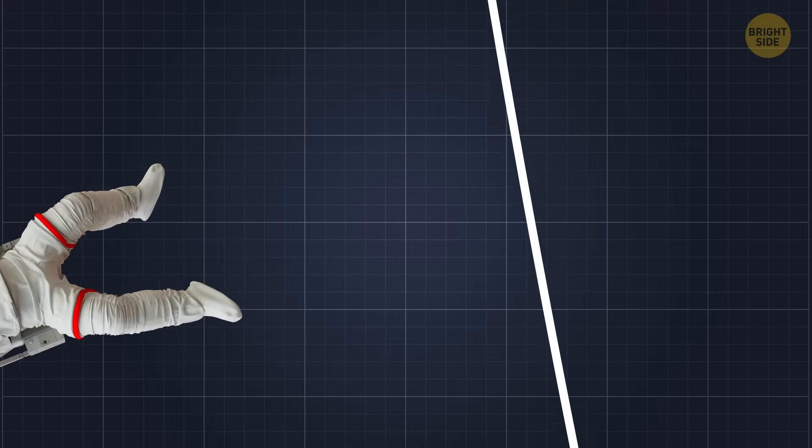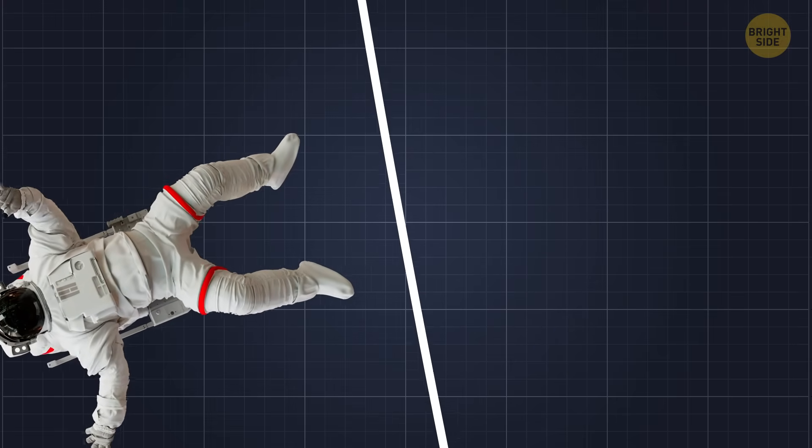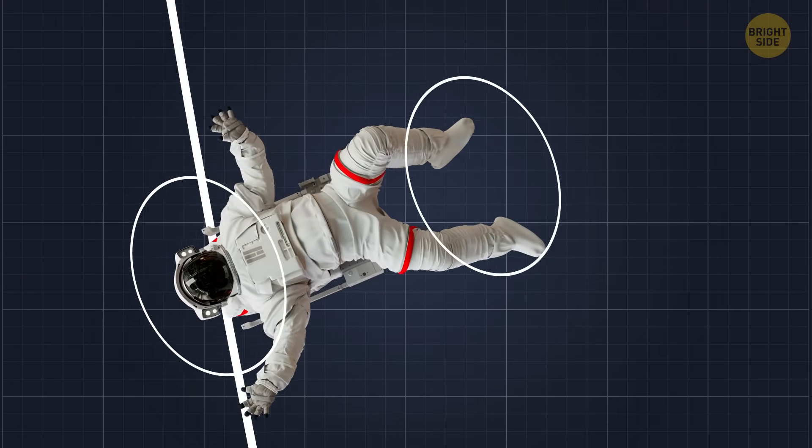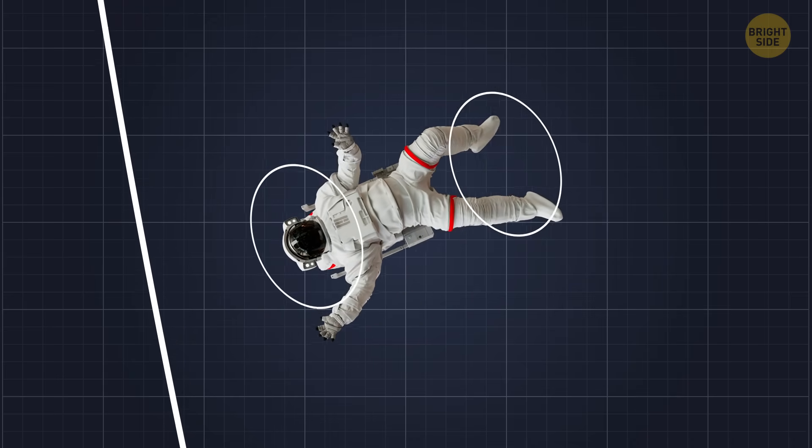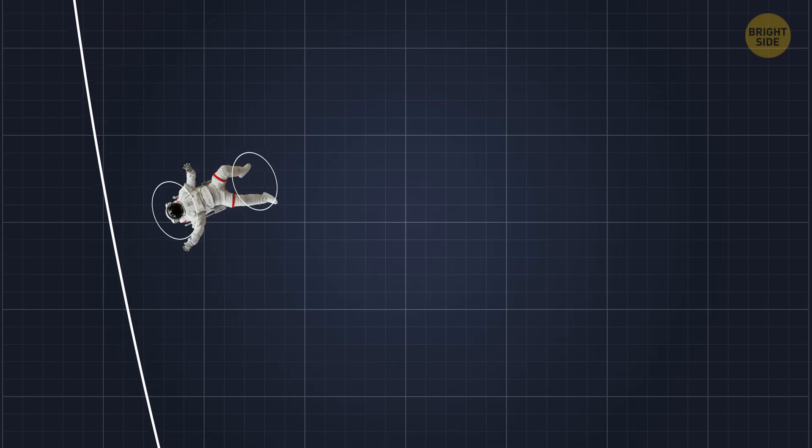That difference matters because the gravitational pull between your head and your toes in a supermassive black hole isn't extreme. You could cross the event horizon without being stretched into a billion pieces.